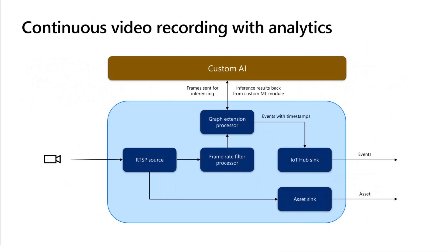Looking at a slightly more complex graph, this enables you to bring your own custom AI and plug it into the Live Video Analytics pipeline. Video is captured by the RTSP source node, then certain frames are sampled by the frame rate filter processor, and those are sent to your own custom AI module via the graph extension processor. You can analyze those frames per the logic you want and return results back to the LVA module. Those results are timestamped and sent out via the IoT Hub sink. While all this is happening, video recording continues, so you see two outputs: the video and the events.